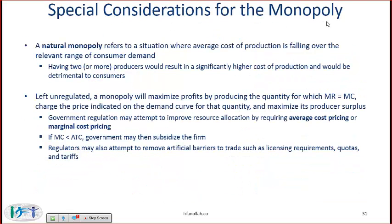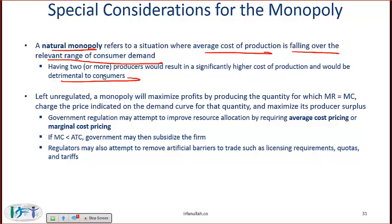Special considerations for the monopoly: a natural monopoly refers to a situation where the average cost of production is falling over the relevant range of consumer demand. Having two or more producers would result in significantly higher costs and would be detrimental to consumers. Even consumers might be better off with a monopoly that has a decreasing cost curve, since the monopoly can produce at very low cost and sell at a relatively low price. If two or three firms entered, the cost for each would be high, and therefore the price charged to the consumer would also be high.